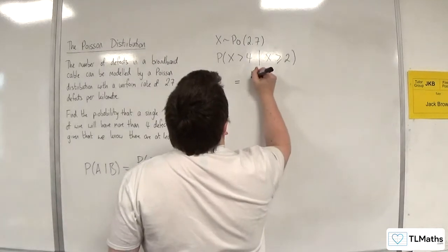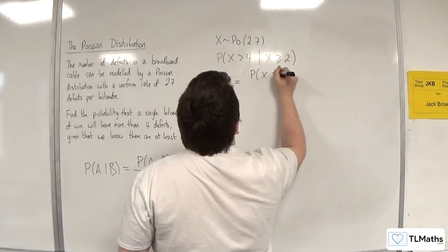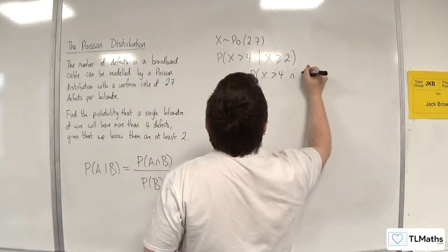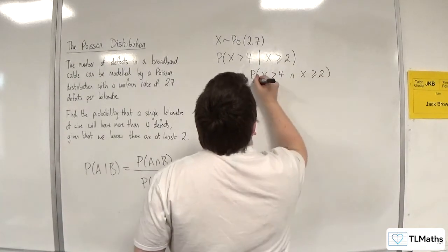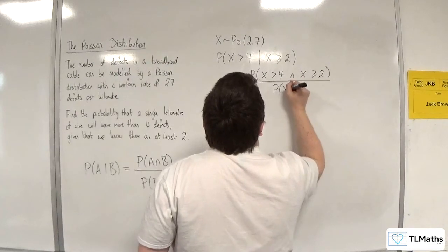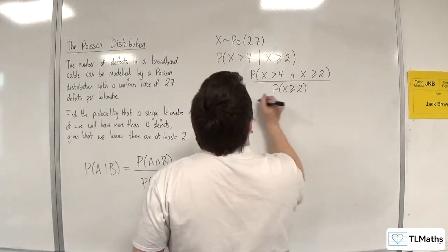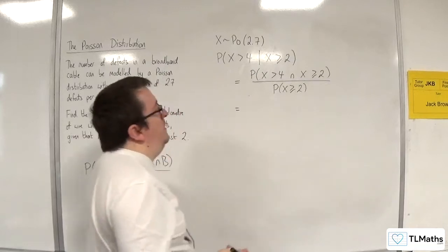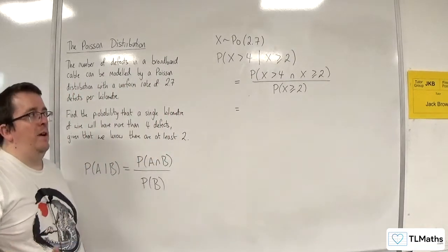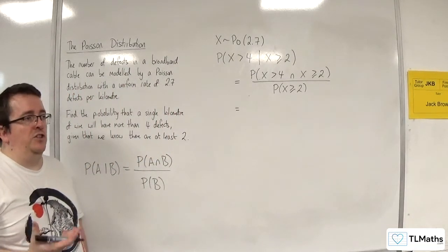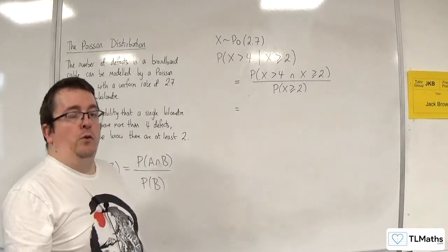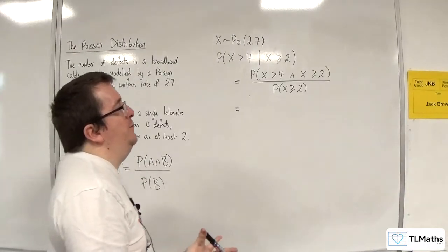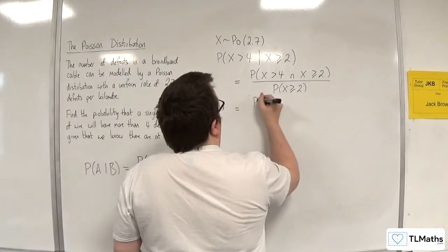So this would be the probability of X being greater than 4 and X is greater than or equal to 2, divided by the probability of X being greater than or equal to 2. Now the probability of X being greater than 4 intersecting with greater than or equal to 2 is just going to be the probability of X being greater than 4. Where do those two regions overlap? Well, just there.